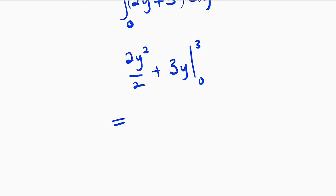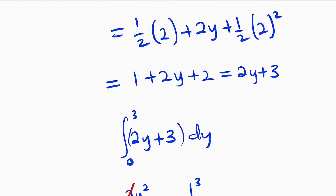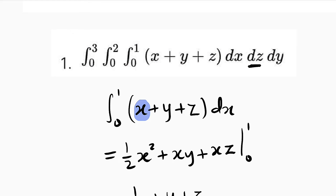The 2s cancel, so we have y squared plus 3y. We substitute y equal to 3: 3 squared plus 3 multiplied by 3. 3 squared is 9 and 3 times 3 is also 9. Finally, 9 plus 9 equals 18. Therefore the first problem is equal to 18. If you integrate the whole function with respect to x, z, and y, you are going to obtain 18.